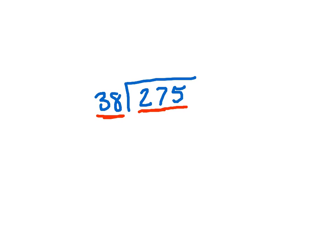I hope this works. So 38 goes into 275, we're going to say 7 times. So let's see what happens with that. 7 times the 8 is 56. 7 times 3 is 21, plus the 5 is 26.